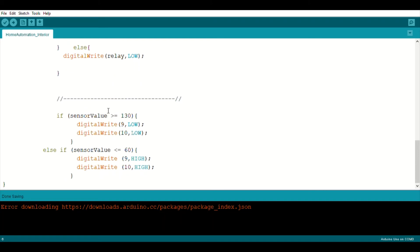The photoresistor code states that if the value of the photoresistor is greater than or equal to 130—that means when light is there—then the lights should be off. And if the photoresistor value is less than or equal to 60—that means when it's dark—the lights should be on. Which means when light is there, the bulbs can be off, and when it's dark, the bulbs can be on.